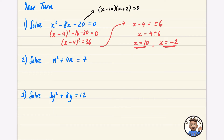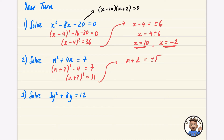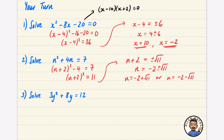For n² + 4n = 7, completing the square gives (n + 2)² − 4 = 7, so (n + 2)² = 11. Square rooting: n + 2 = ±√11, so n = −2 ± √11. This means n = −2 + √11 or n = −2 − √11. You could calculate decimal versions of these as well.